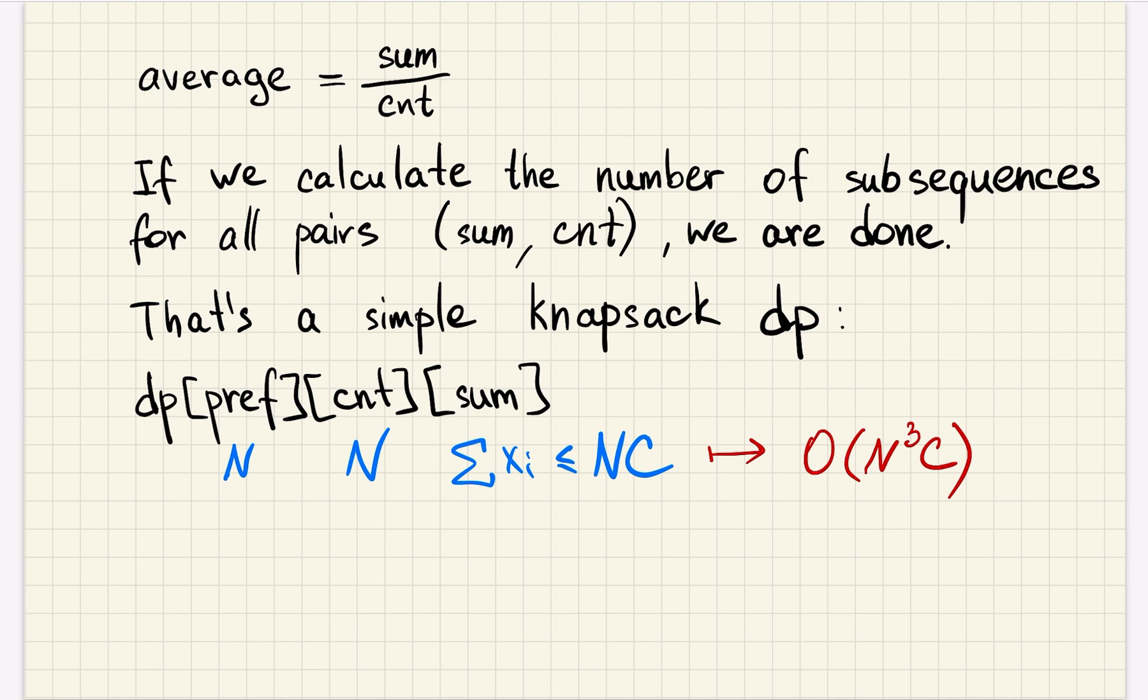We can do that with a simple knapsack DP. Usually we just store for each sum and for each prefix the number of ways to achieve that, but here we should also store count. So the state of our DP will be the prefix we considered, number of chosen elements, and the sum of chosen elements.